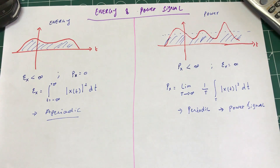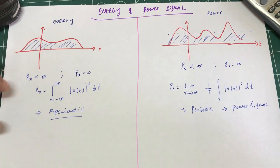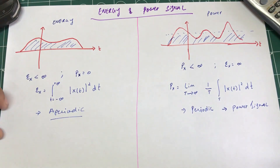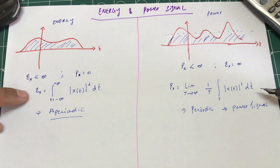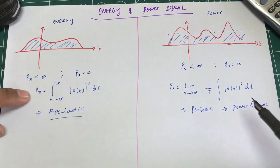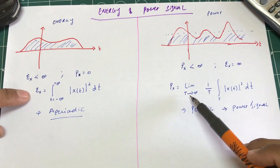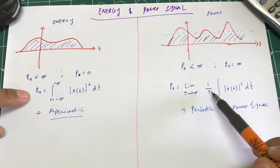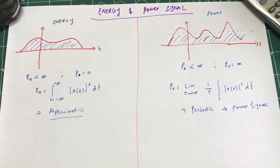One important thing to remember: a signal cannot be both a power signal and an energy signal. It is either one or the other. In an energy signal, you square it and take the area under the curve. In a power signal, you do the same thing but average it out by taking the limit over that period.